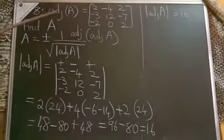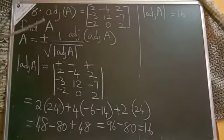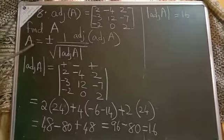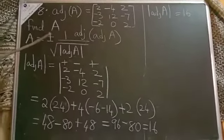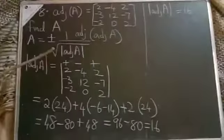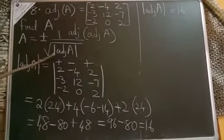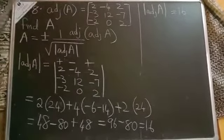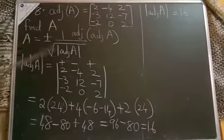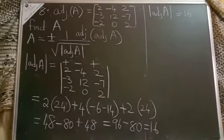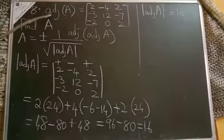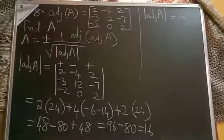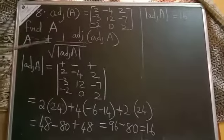In this situation, when adjoint is given and we need to find A, we have to make use of this formula: A is equal to plus or minus 1 by root of determinant of adjoint of A, multiplied by adjoint of adjoint of A. Use this formula in this question. You can expect 3 marks for this type of question.